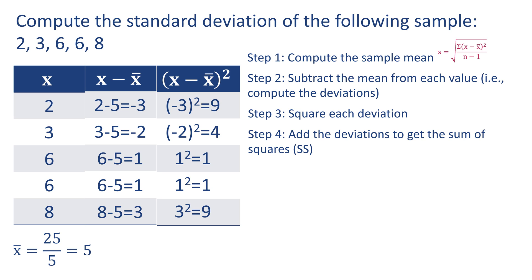Step 4: add the deviations to get the sum of squares, or SS for short. 9 plus 4 plus 1 plus 1 plus 9 equals 24. This is the sum of squares.